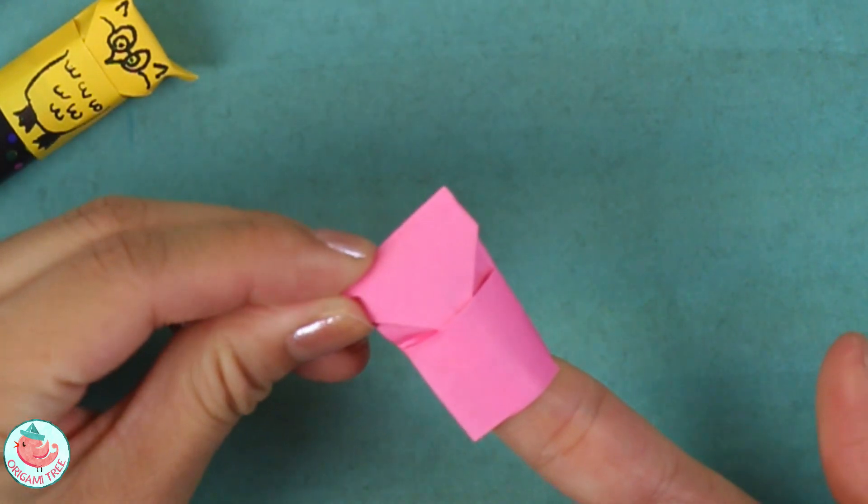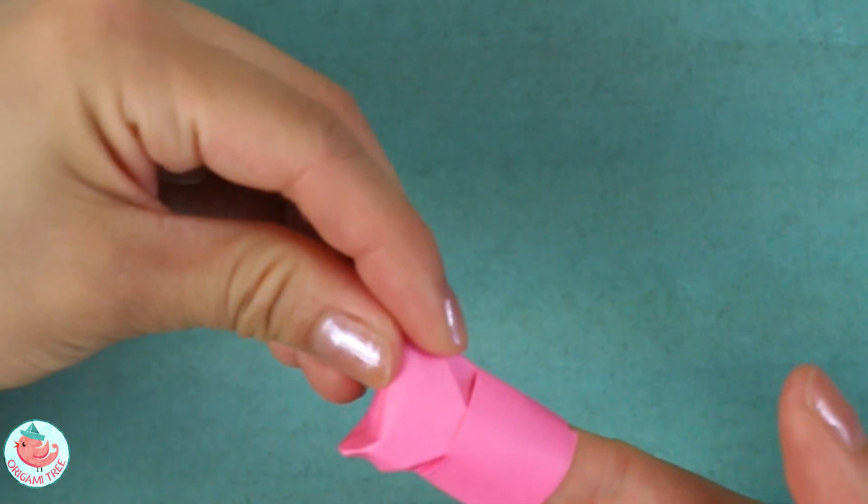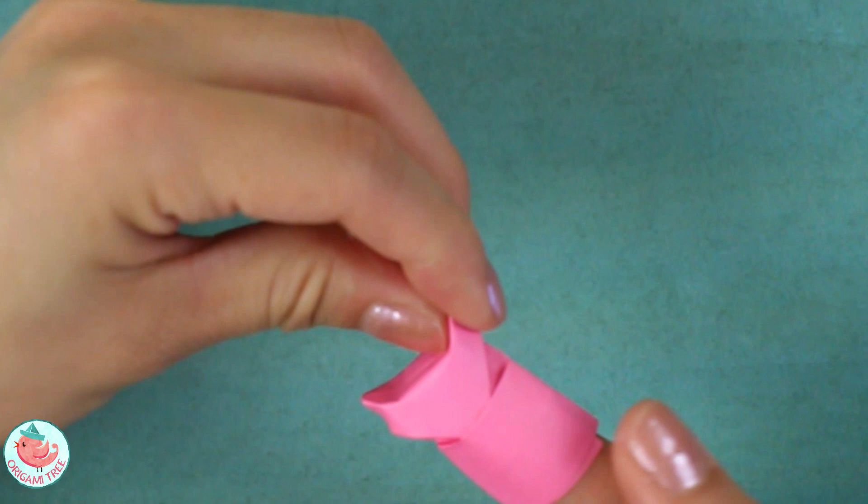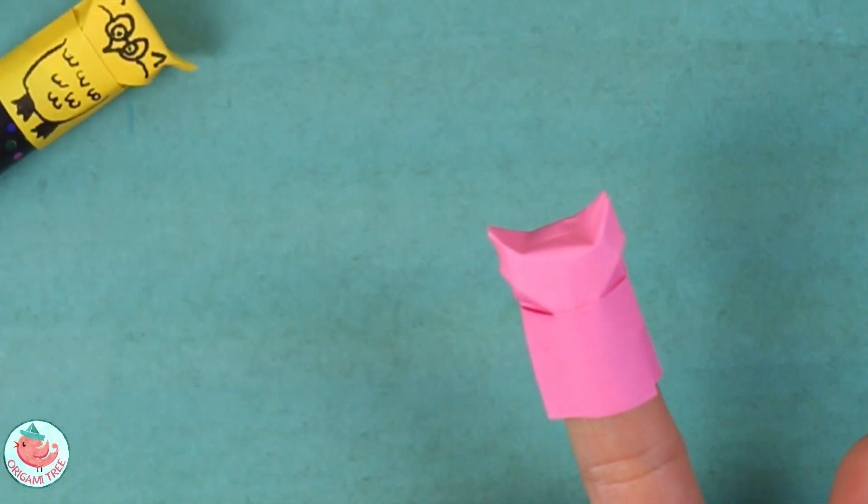Now you're just going to create the ears. To create the ears, just do a little pinch on the left side and then also a pinch on the right side. Now you have the owl's little ears, they're so so cute.